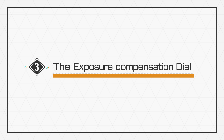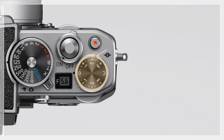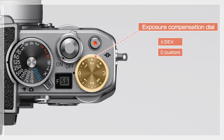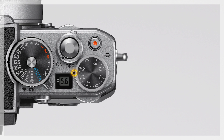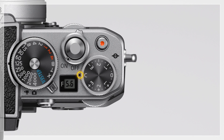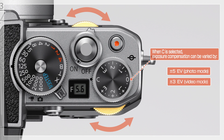Now, to the exposure compensation dial. Exposure compensation can be adjusted in all modes except M. The exposure compensation dial is used to deliberately alter exposure from the value suggested by the camera. Higher values make the subject appear brighter; lower values make it darker. Selecting C lets you adjust exposure compensation by rotating a command dial. Exposure can be varied by plus or minus 5 EV in photo mode and by plus or minus 3 EV in video mode.